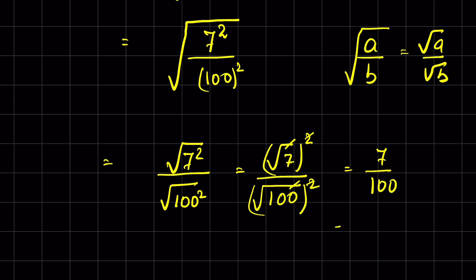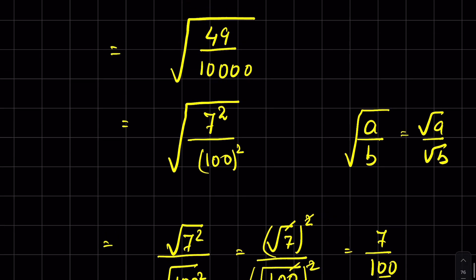7 upon 100 we can write in decimal form. There are 2 zeros, that means after decimal there needs to be 2 digits. So 0.07 is the answer. When you remove the decimal here it will be 7 upon 100. So this is one method.